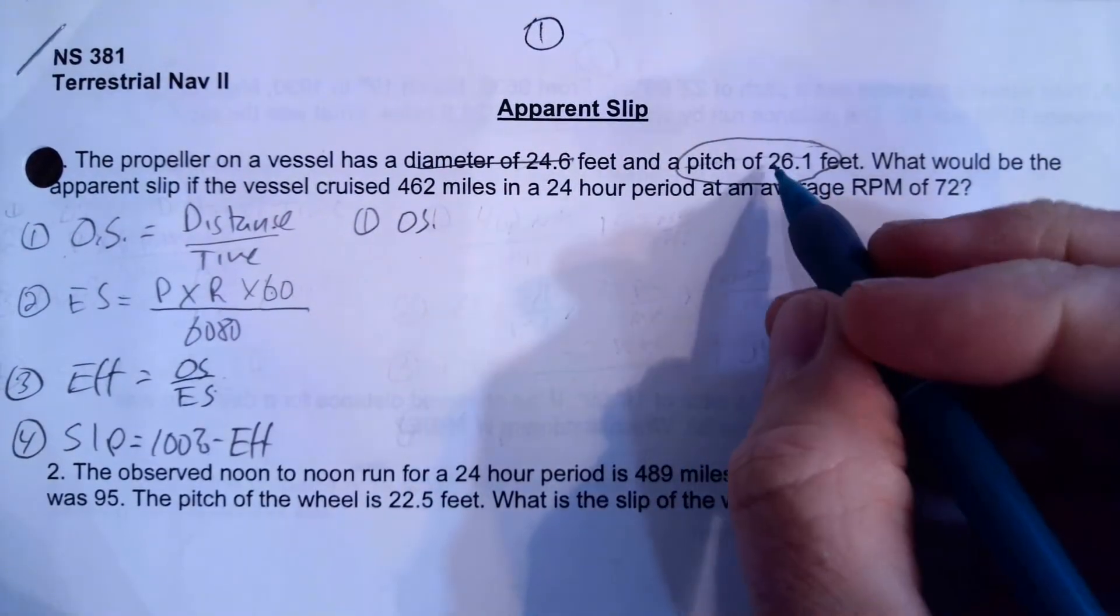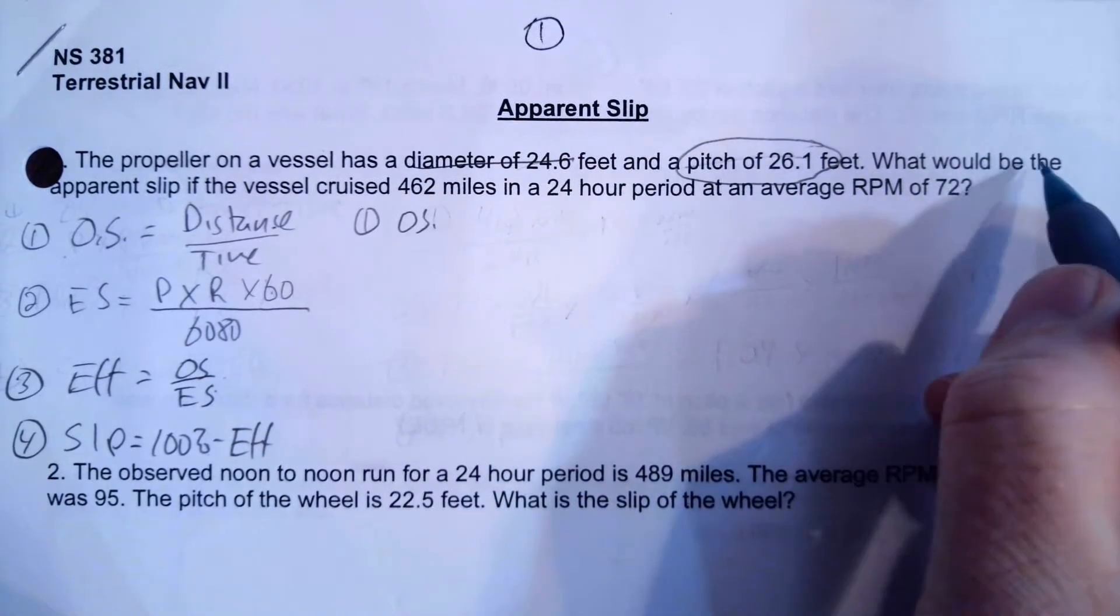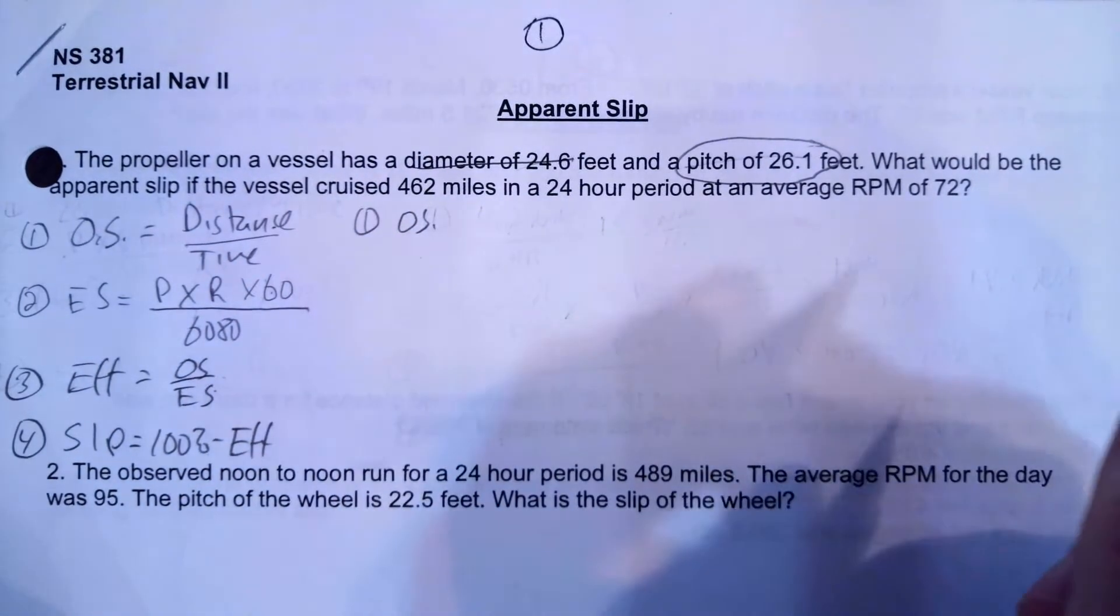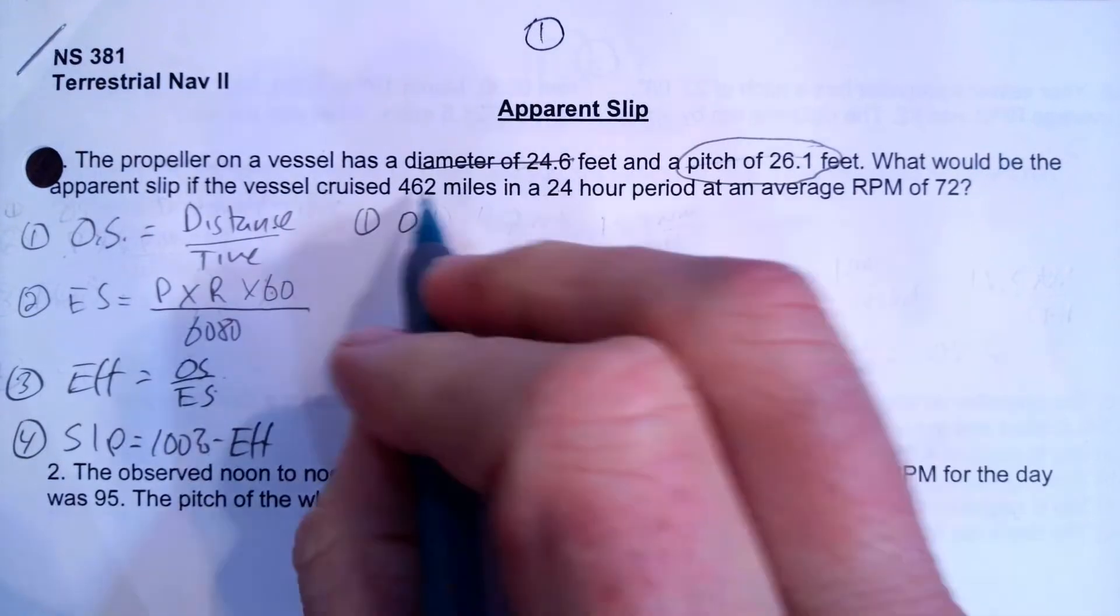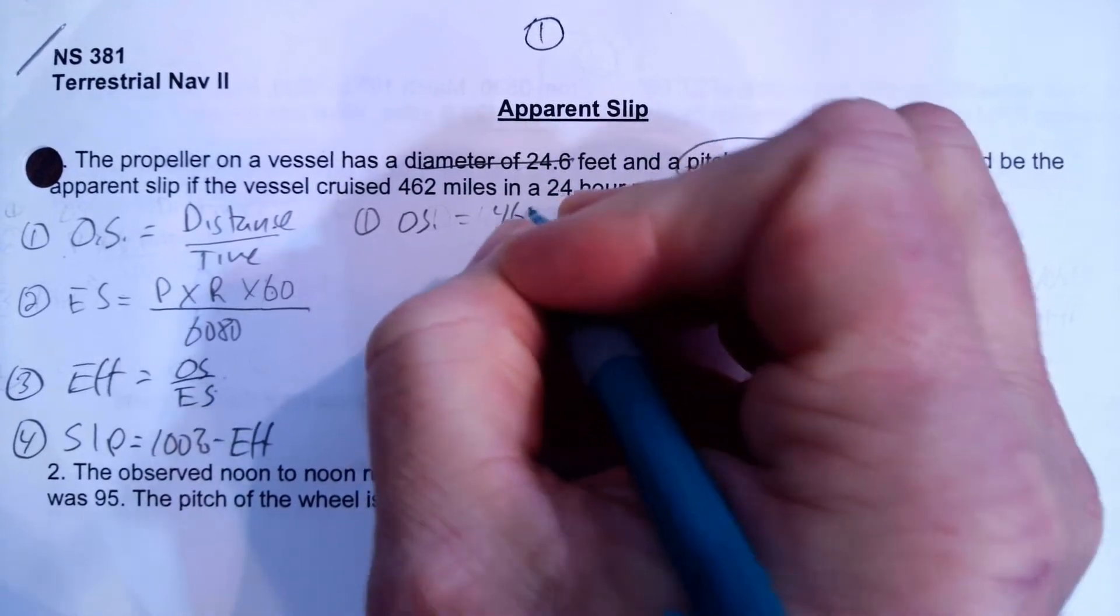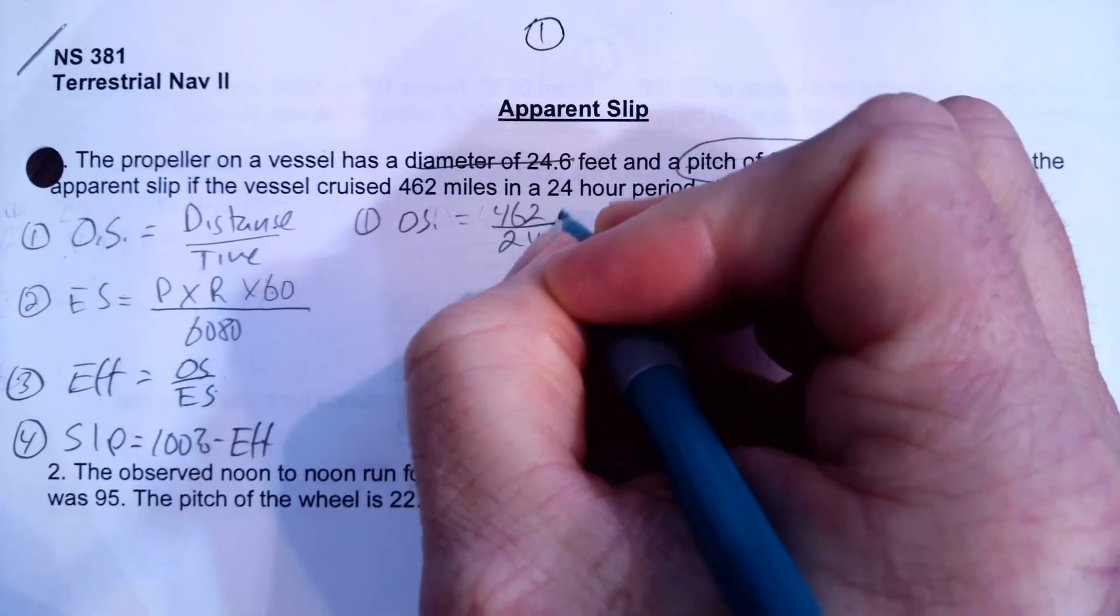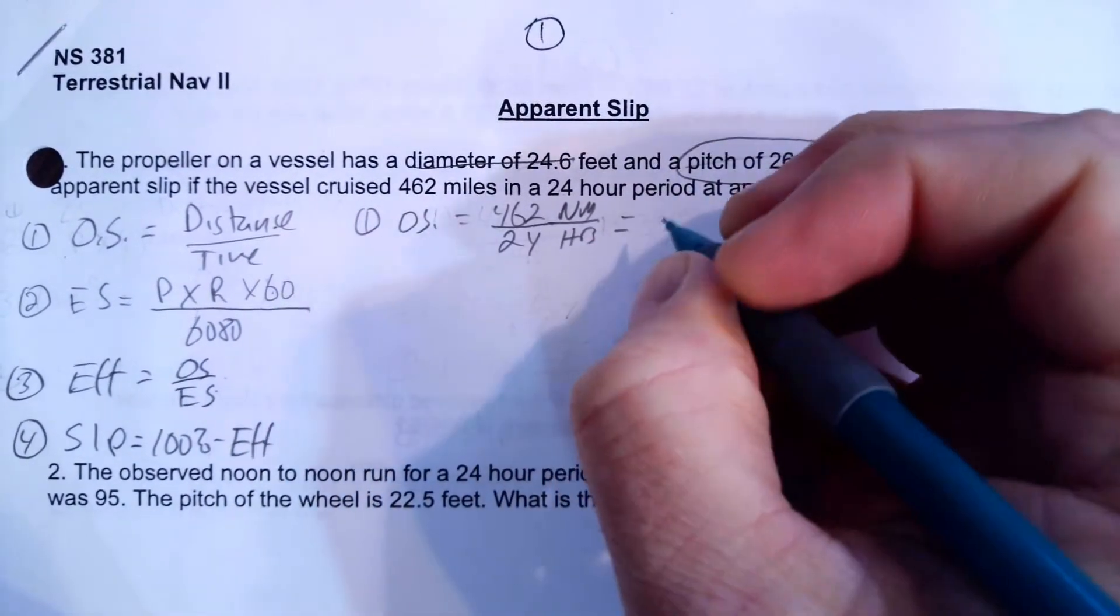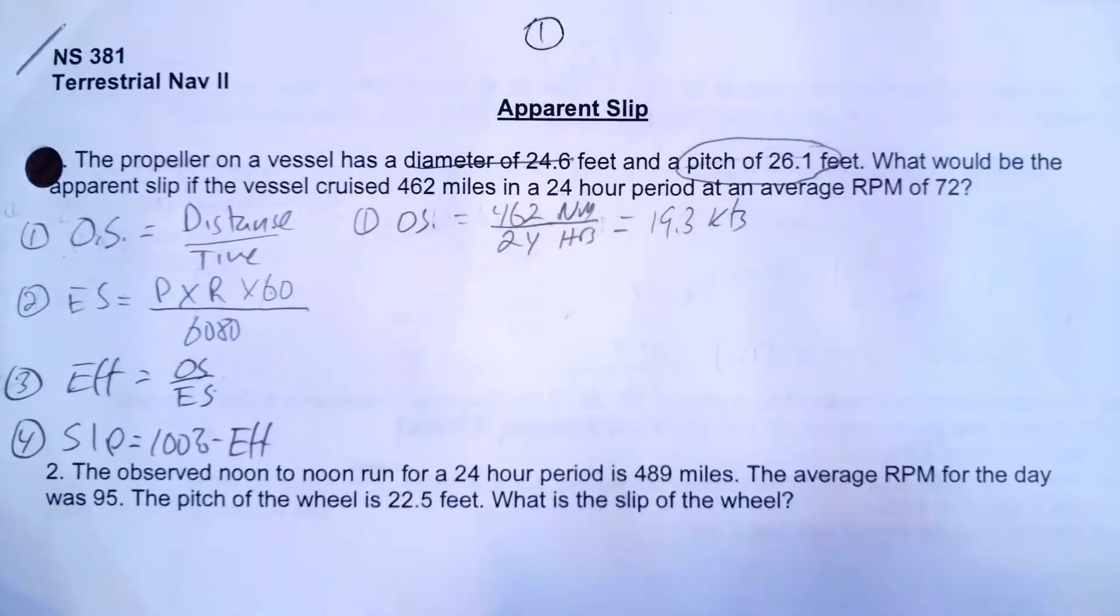But we don't need that just yet. So we're looking for information about our observed speed. So what would be the apparent slip if the vessel cruised 462 miles in 24 hours? Well, so 462 divided by 24 is going to be nautical miles per hour. So that's our speed. So I got to go 462 divided by 24, nautical miles per 24 hours. And when I do that, I'm going to get 19.3 knots.